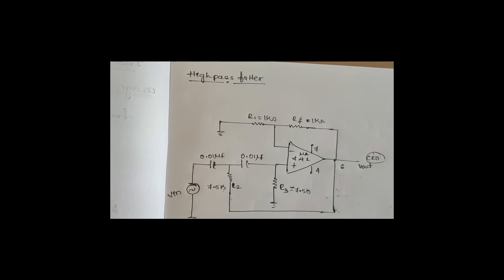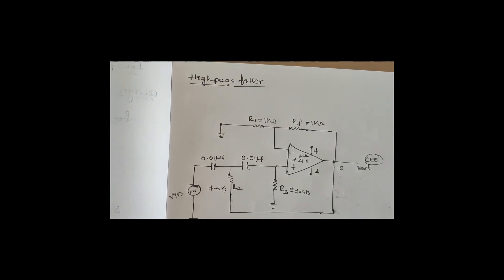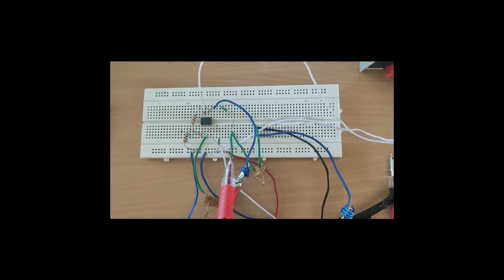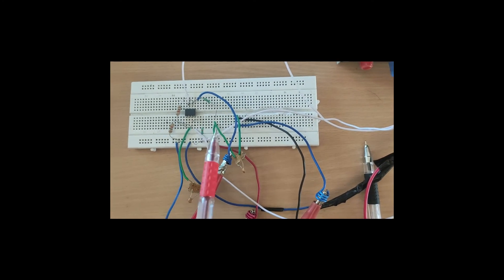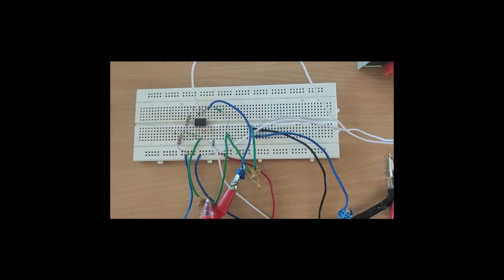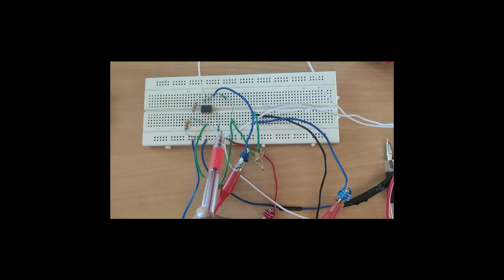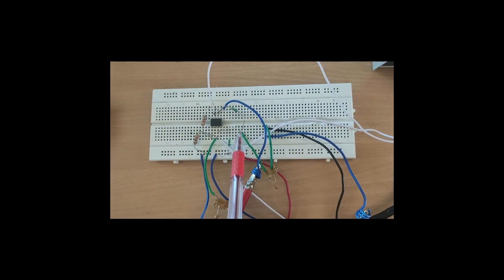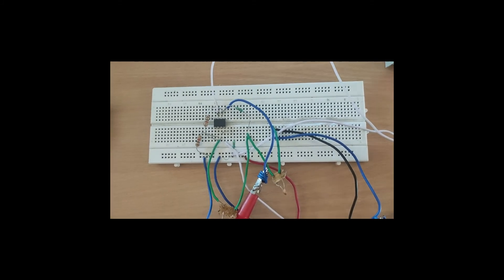In the high-pass filter, varying frequency from a few hertz to a few kilohertz, the output voltage amplitude increases until it reaches the cutoff frequency, after which the amplitude remains constant. The circuit shown in the reference has been rigged up with the capacitor and resistor positions swapped — the 7.5kΩ resistor placed where the capacitor was, and the capacitor placed where the resistor was.